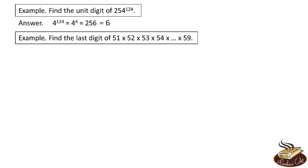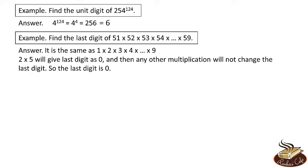Let's find the last digit of 51 × 52 × 53 × 54 × ... × 59. The unit digit is the same as the unit digit of 1 × 2 × 3 × 4 × 5 × 6 × 7 × 8 × 9. We know that 2 × 5 = 10, which gives a last digit of 0. Any further multiplication will not change the last digit — multiplying anything by 0 gives 0. So the last digit is 0.